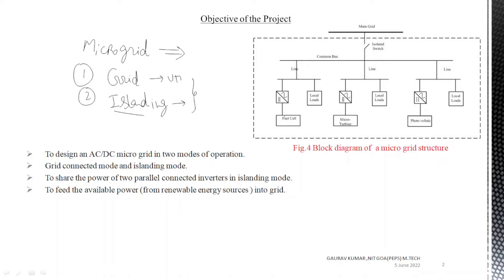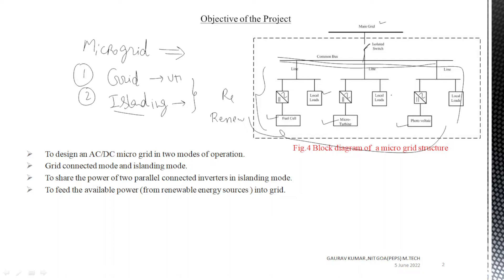Microgrid is an integration of renewable energy sources — micro turbine, fuel cells, photovoltaic, and wind energy. If all these renewable energy sources are connected to a common bus with an isolation switch, that combination is your microgrid. You can connect it with the main grid or use it for local load. In India we are using microgrid as a pilot project, and later we will implement it for small loads such as colleges, hospitals, or small colonies.